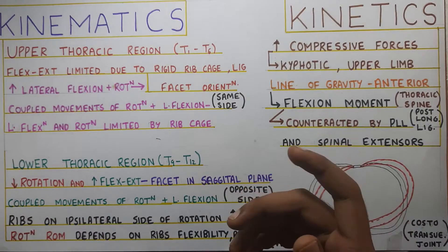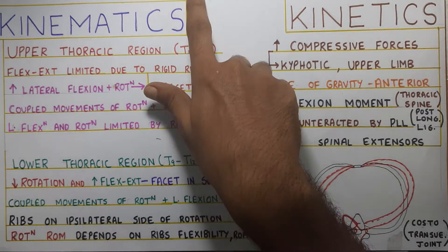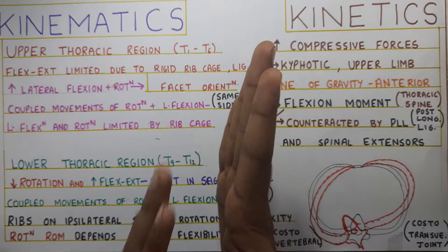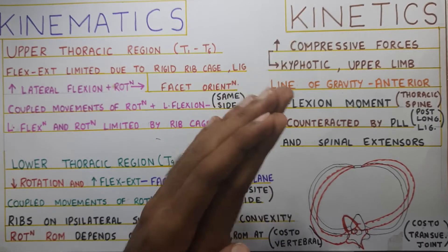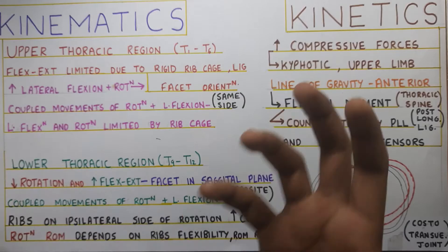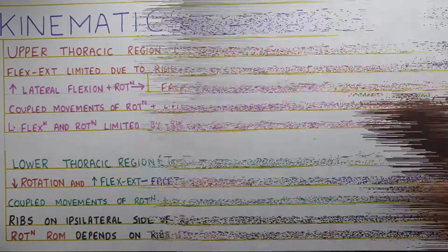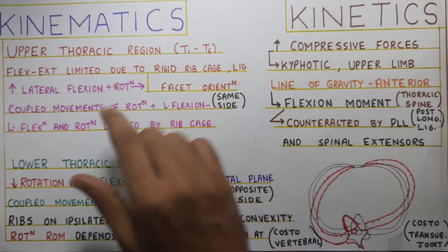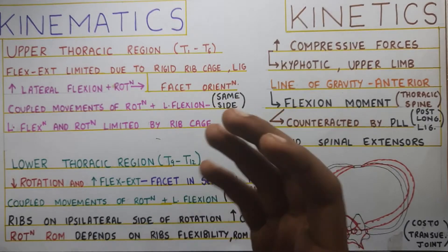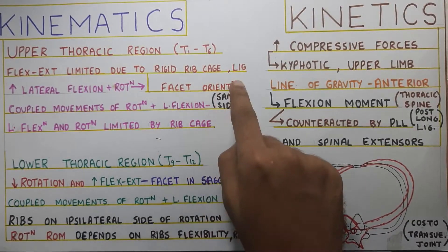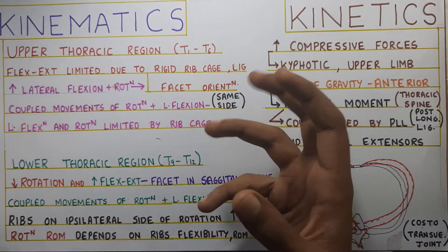Extension is further limited by the lamina, facets, anterior longitudinal ligament, and the abdominal muscles which are present on the anterior side and resist extension. Also the capsule, which is comparatively more taut than in the cervical region. The movements that are possible — lateral flexion and rotation — have the highest range of motion in the thoracic region because of its facet orientation, and these are always coupled.